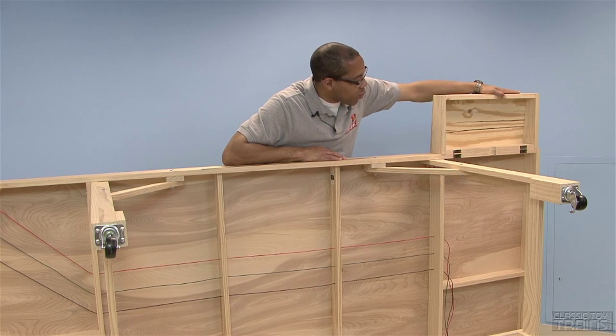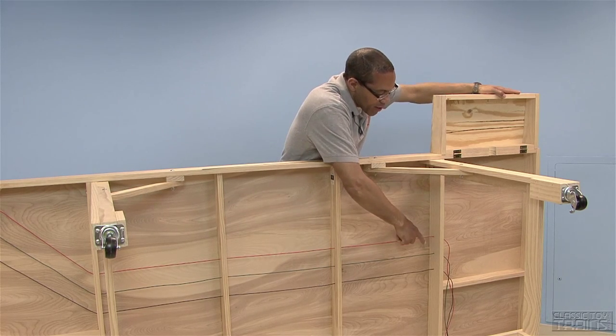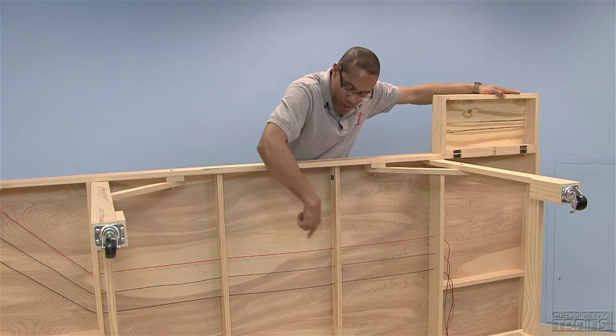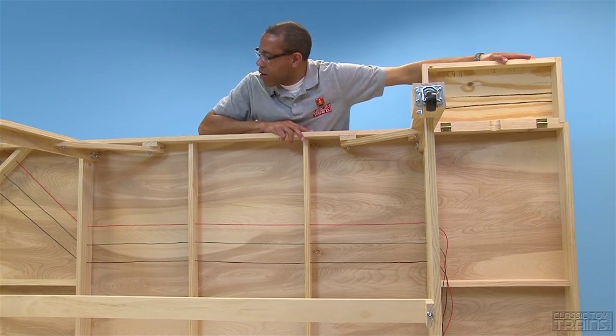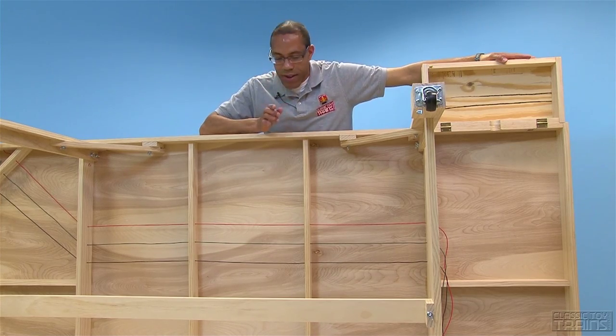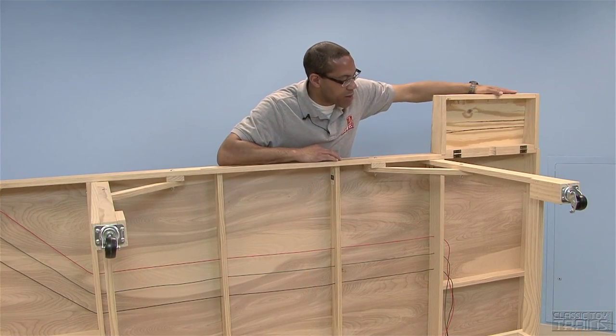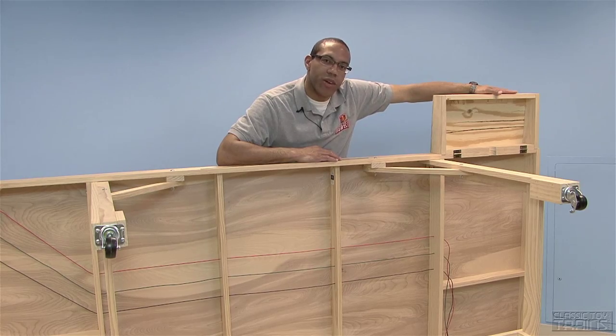I ran the wire from the control panel all the way underneath through each joist and the entire length, eight foot length of the layout and tied it off using a pigtail at one end and the other end of course will connect to the post on the KW transformer.